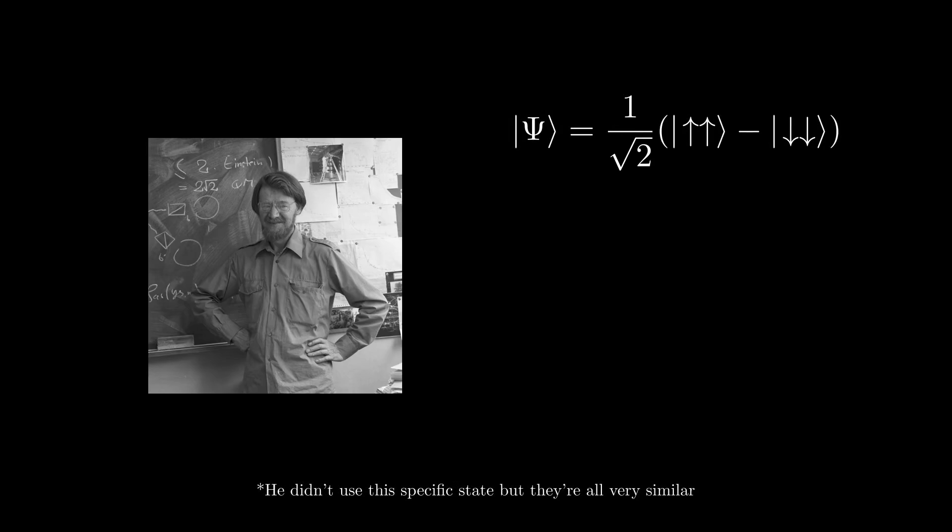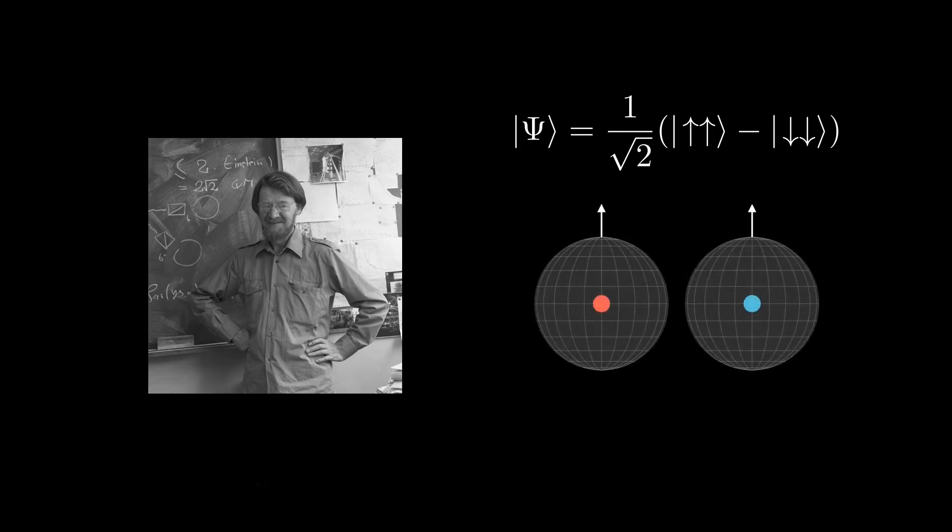So now we come to 1964, when John Bell enters the picture, and he considers a two-particle state of up-up minus down-down, which means that you have two electrons, and when you put them through two detectors, each oriented in the Z direction, they're both either going to deflect upward or downward.